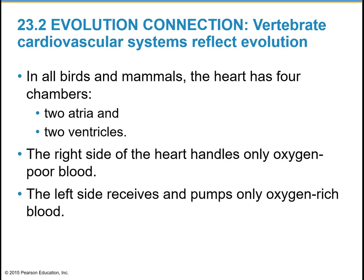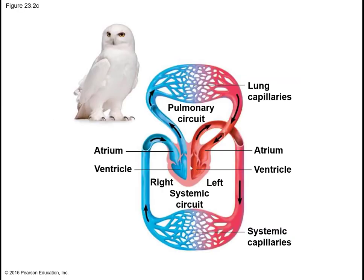In all birds and mammals, the heart has four chambers: two atria and two ventricles. Here is a generalized heart in the middle, with a representation of the pulmonary circuit going to and from the lungs, and the systemic circuit going to the body and back. The right side of the heart handles only oxygen-poor blood, represented by blue coloration, while the left side receives and pumps only oxygen-rich blood, shown in bright red.